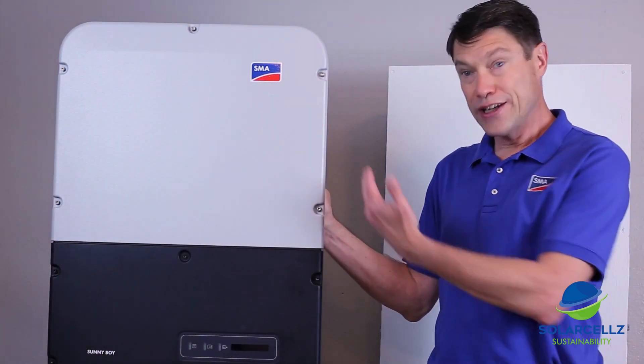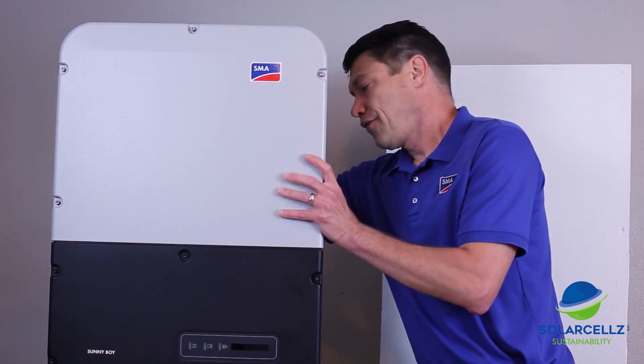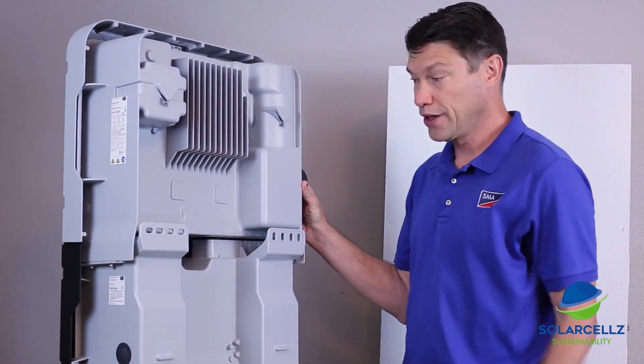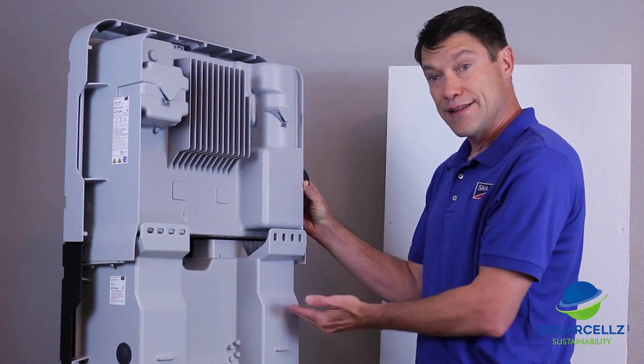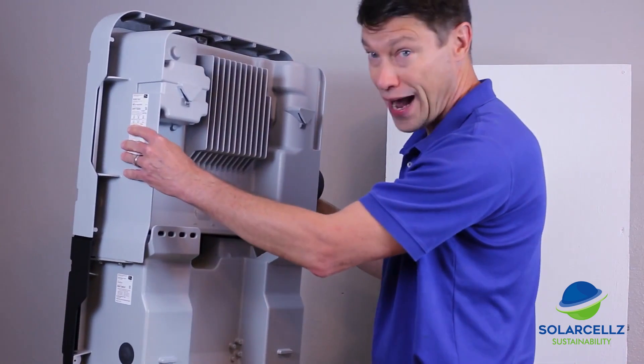To install the inverter, we're going to separate the power unit from the connection unit. And in fact, if we look at the back of the inverter, the hardware for mounting is built right into the connection unit body. So let's go ahead and separate these two sections. To do this, I'm going to place the inverter back in its shipping box.